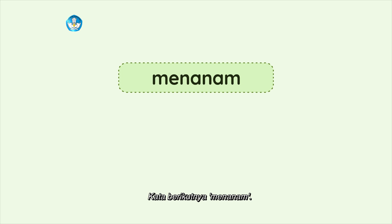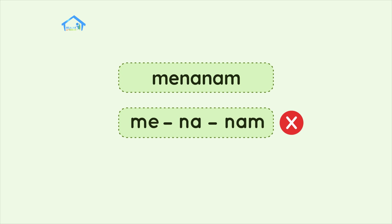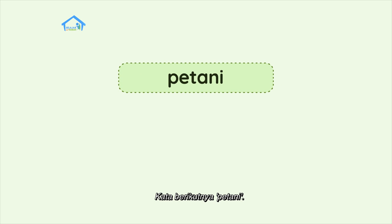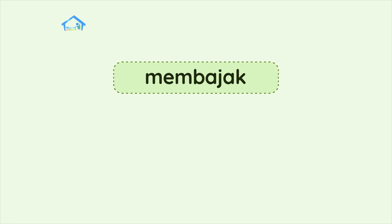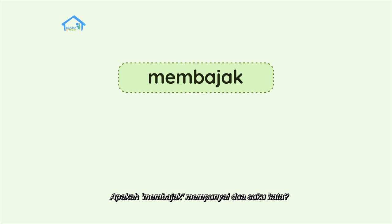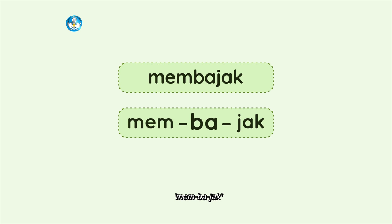Kata berikutnya, menanam. Apakah menanam mempunyai dua suku kata? Me-na-nam. Ada tiga suku kata, bukan dua. Kata berikutnya, petani. Apakah petani memiliki dua suku kata? Pe-ta-ni. Ada tiga suku kata, bukan dua. Kata berikutnya, membajak. Apakah membajak mempunyai dua suku kata? Mem-ba-jak. Ada tiga suku kata, bukan dua.